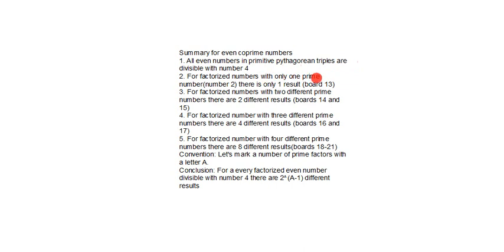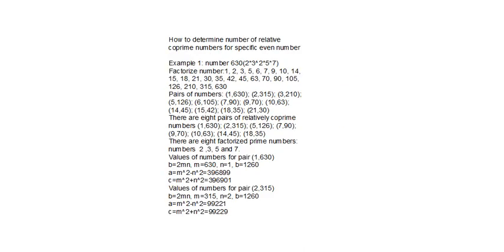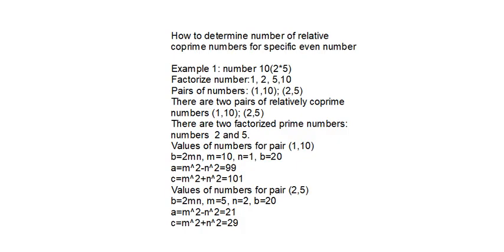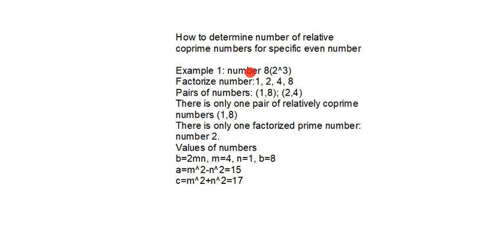...and this is number 2, there is only one result. Let's have a look. This is the number 8 in this example, but this could be written as 2 to the power of some natural number. There is only one pair: 1 and 2 to the power of some natural number.